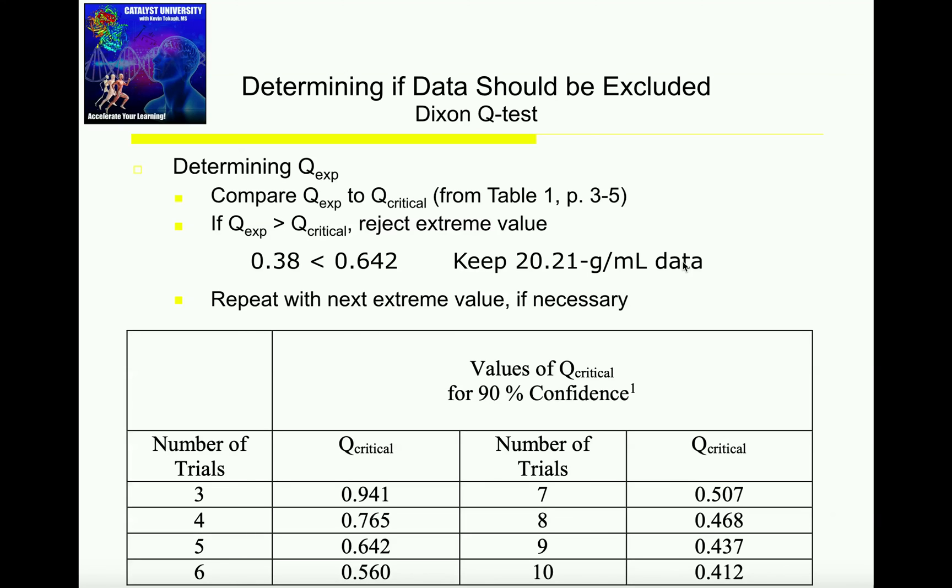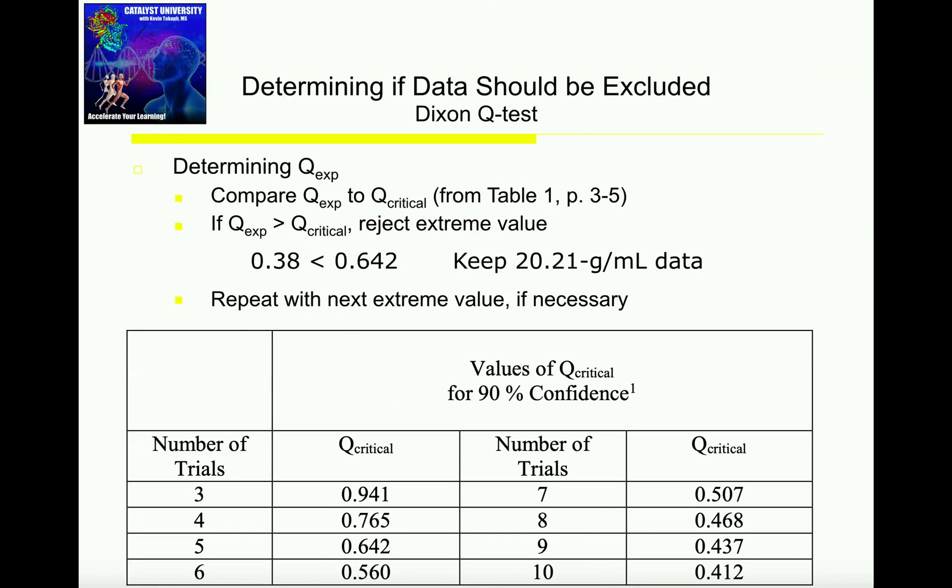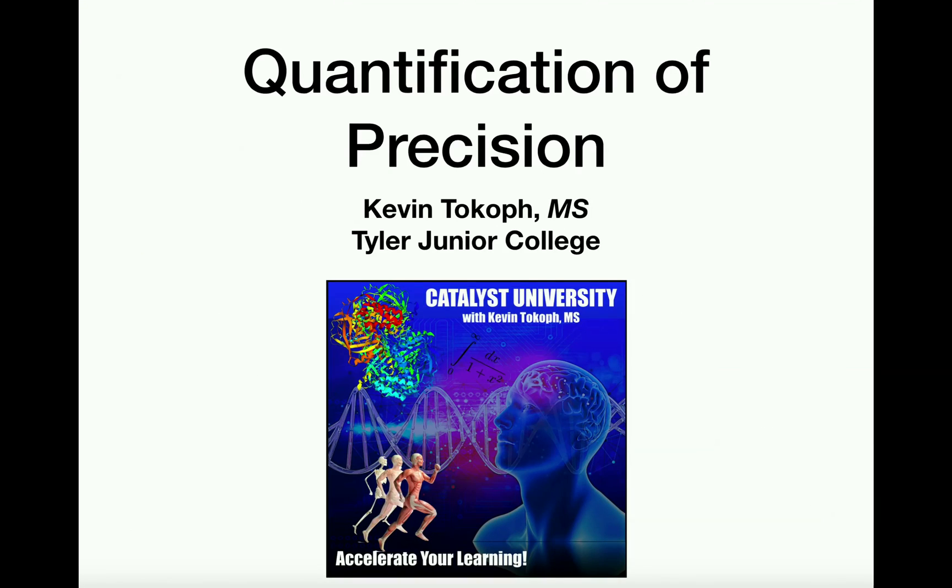This Dixon Q-test, you can keep repeating and repeating for all the extreme values. What you could do next is repeat it with the high value and just see if you could throw that one out. But hopefully the Dixon Q-test makes sense to you. Pretty much all you're doing is following these steps and basically just answering the question, can I throw out an extreme data point? Please make sure to like this video and subscribe to my channel for future videos and notifications. Thank you very much.